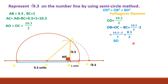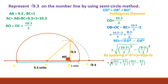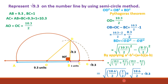Proof that BD = √9.3: AB = 9.3, BC = 1, AC = 10.3, AO = OC = 10.3/2. Using Pythagoras: OD² = OB² + BD², where OB = OC − BC = (10.3/2) − 1 = 8.3/2. Applying the identity a² − b² = (a+b)(a−b): BD = √((10.3/2 + 8.3/2)(10.3/2 − 8.3/2)) = √(18.6/2 × 2/2) = √9.3. So BD = square root of 9.3.